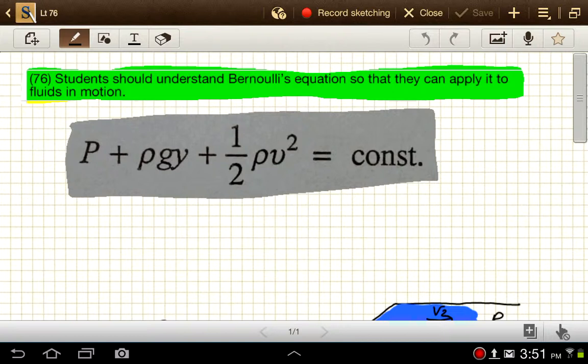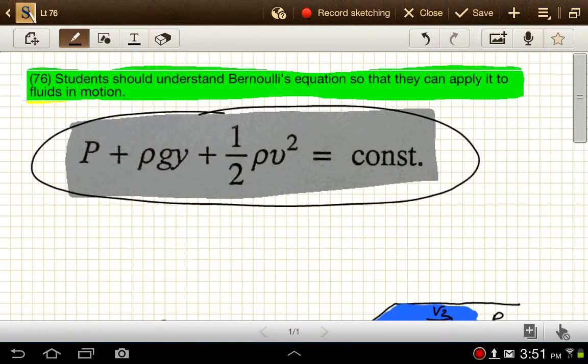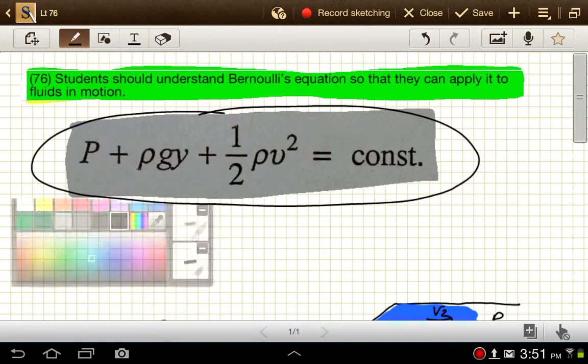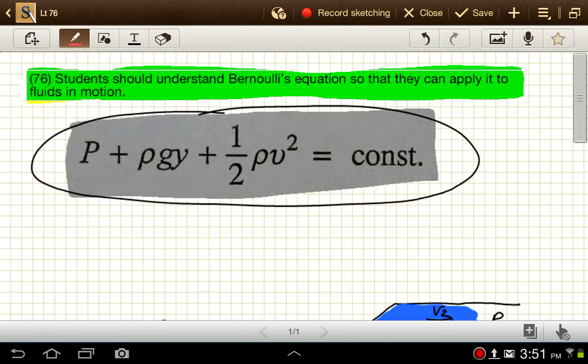And so for that, we use what's called Bernoulli's equation, and this is how it's written out on the AP Physics B exam. And this may seem a little bit out of left field before we see how it's derived.